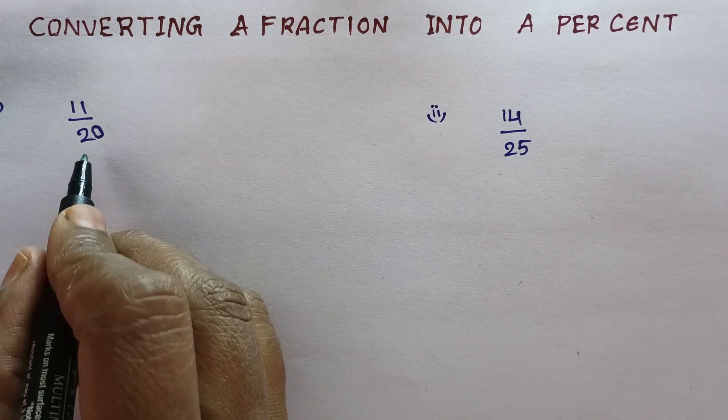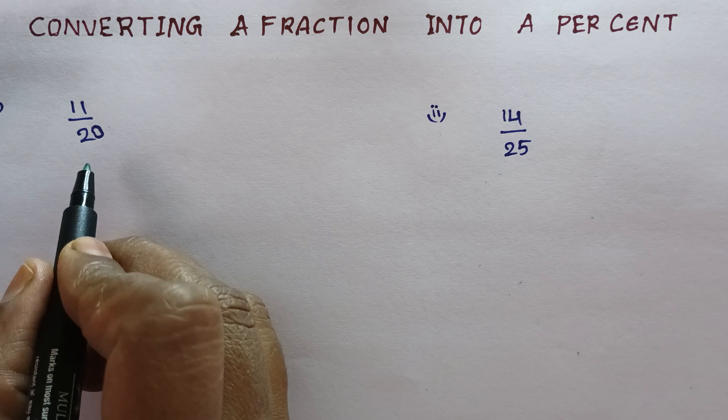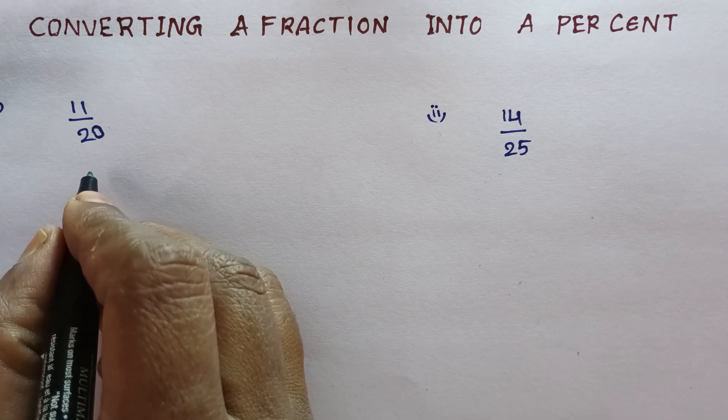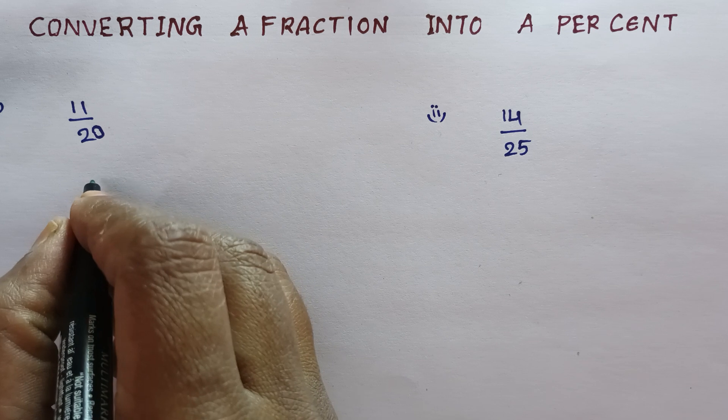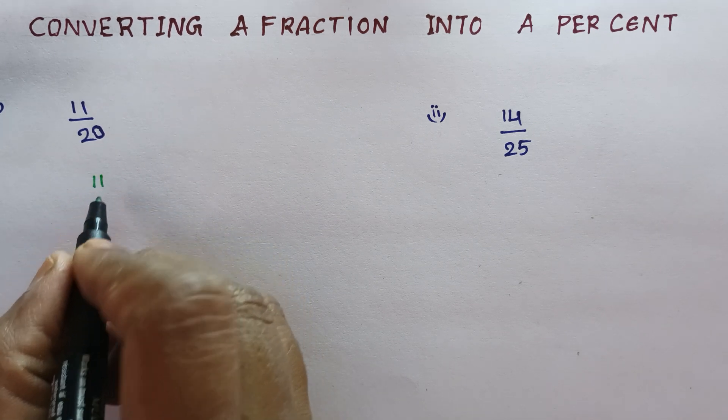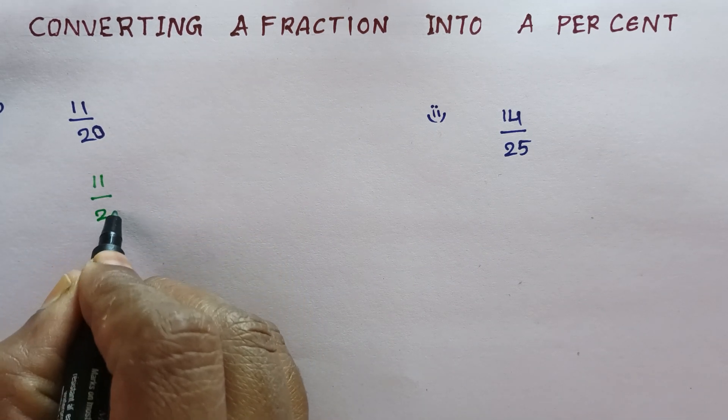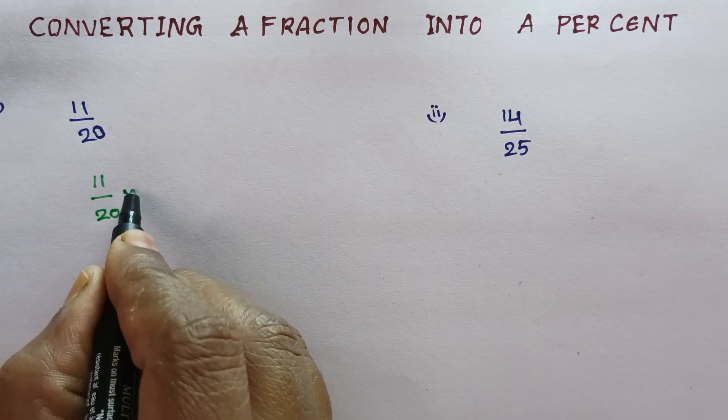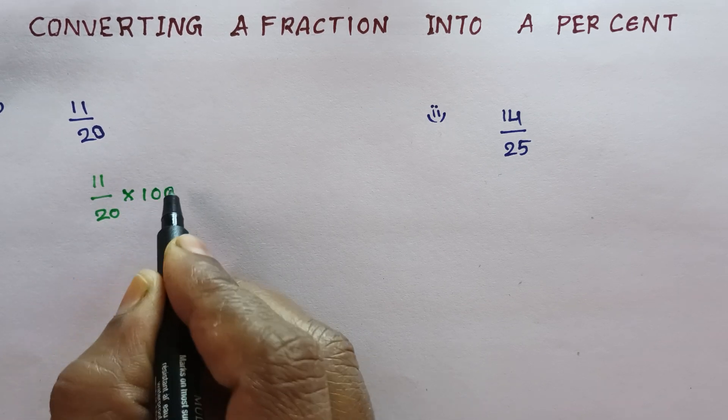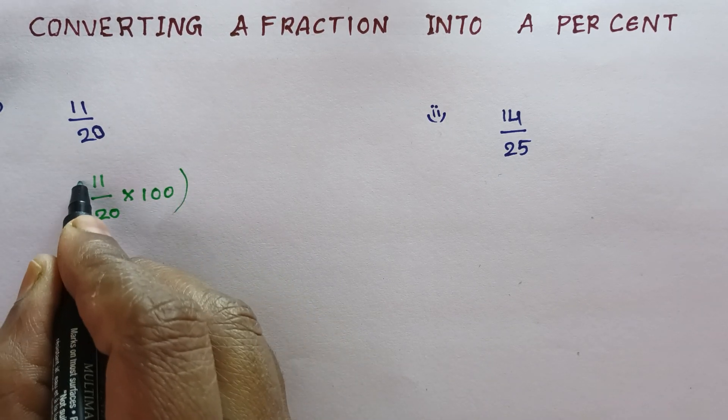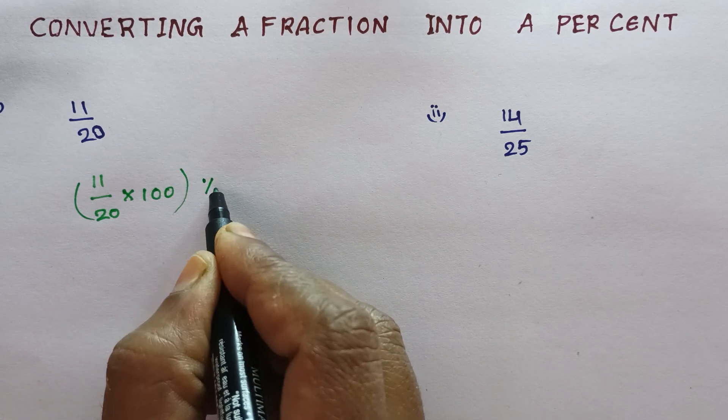So, to convert a fraction into percent, we need to multiply with 100. That means 11 by 20 into 100. Then, it will turn as a percentage.